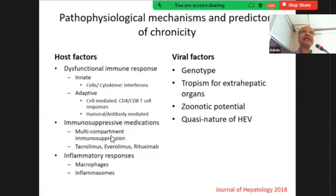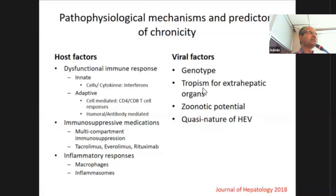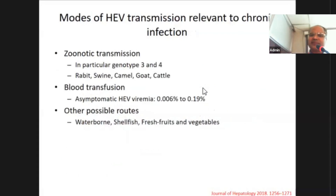The severity of immunosuppression and mechanism of the drug used are important factors. Not all drugs cause equal immunosuppression; the most culprit agents are tacrolimus, everolimus, and rituximab. Viral factors also play a role: genotypes 3 and 4 are more commonly associated; tissue tropism and quasi-species nature of the virus contribute. As HEV replicates, subtypes are generated; immunity against one sub-type develops but not against another, allowing viral persistence. Zoonotic, bloodborne, and waterborne transmission are documented modes.